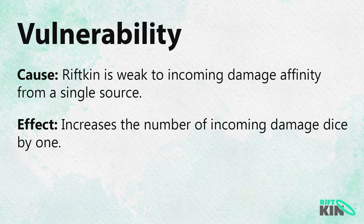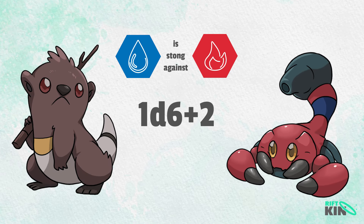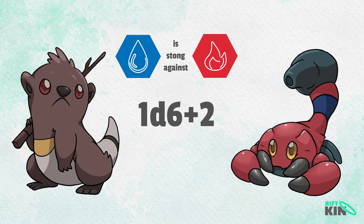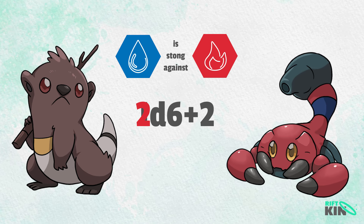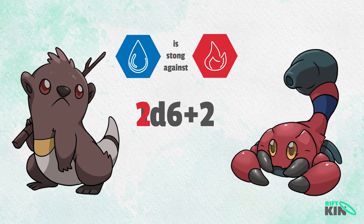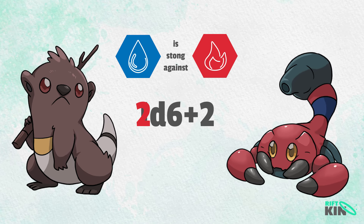Vulnerability! Vulnerability is the inverse of resistance, and is represented by increasing the number of damage dice by 1. If the aquatter were to strike pinch blaze with water damage, that attack would deal an additional die of damage to pinch blaze.